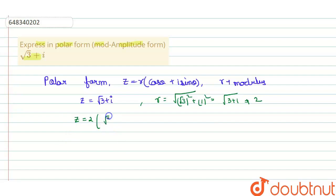Taking 2 common, it will be √3/2 + i(1/2). Now comparing with the general equation of the polar form, our cos θ comes out to be √3/2...